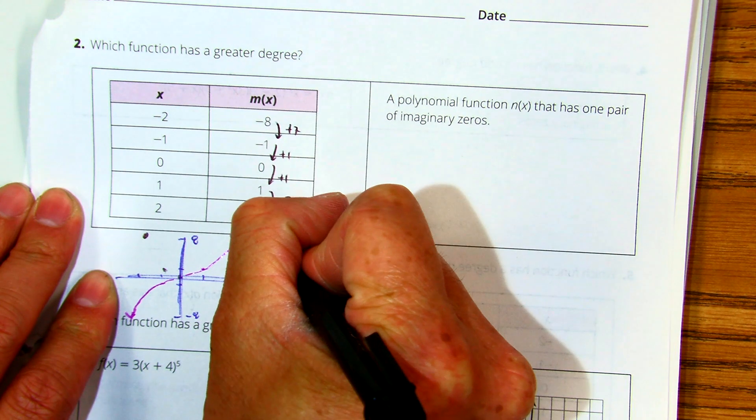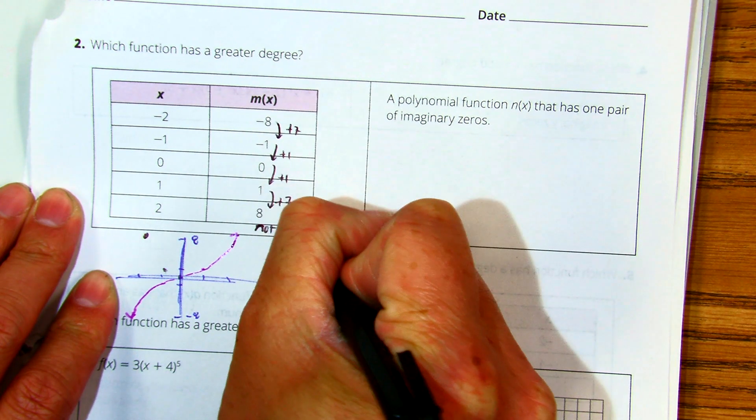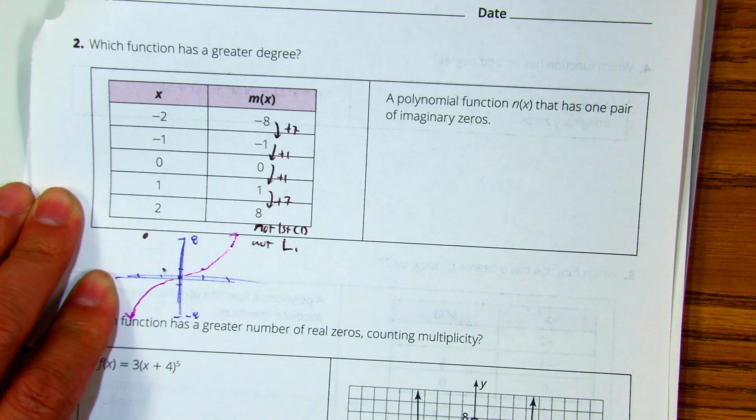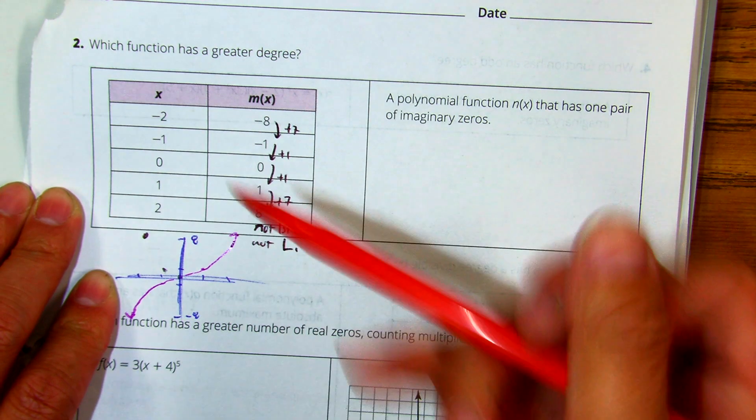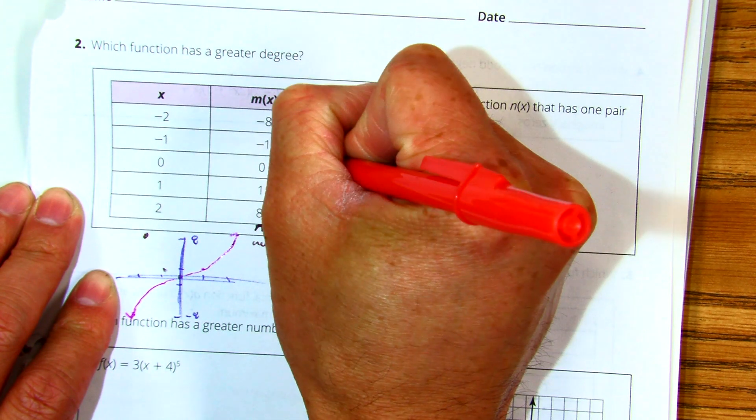So it's not a first common difference. Therefore, it's not linear. Okay, let's try a second one now. From seven to one? Minus six to one to one?